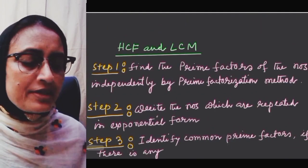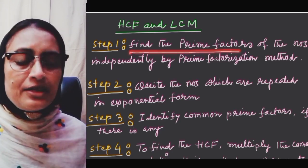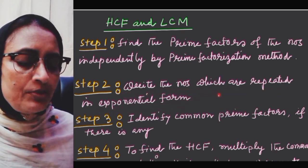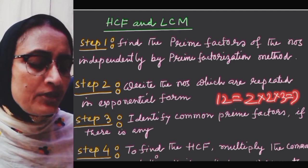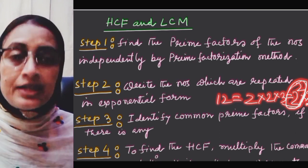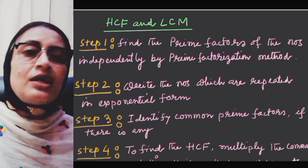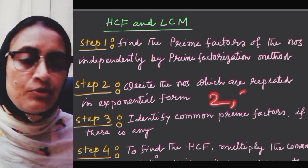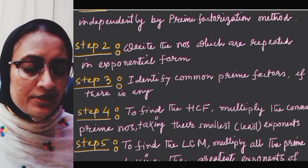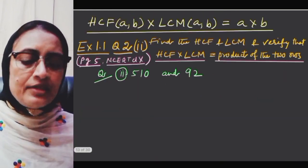The steps to find HCF and LCM are: Step 1 — find the prime factors of the numbers independently by the prime factorization method. Step 2 — write the numbers in exponential form, for example 12 = 2² × 3. Step 3 — identify the common prime factors. Step 4 — to find the HCF, multiply the common prime factors taking the smallest exponents. To find the LCM, multiply all prime factors taking the greatest exponents.